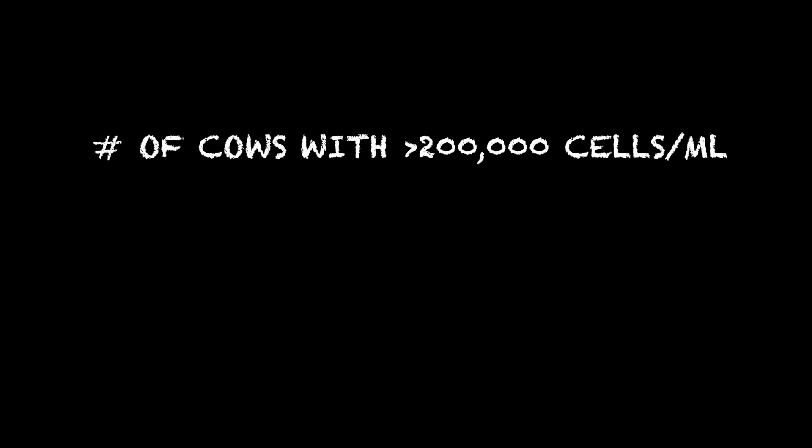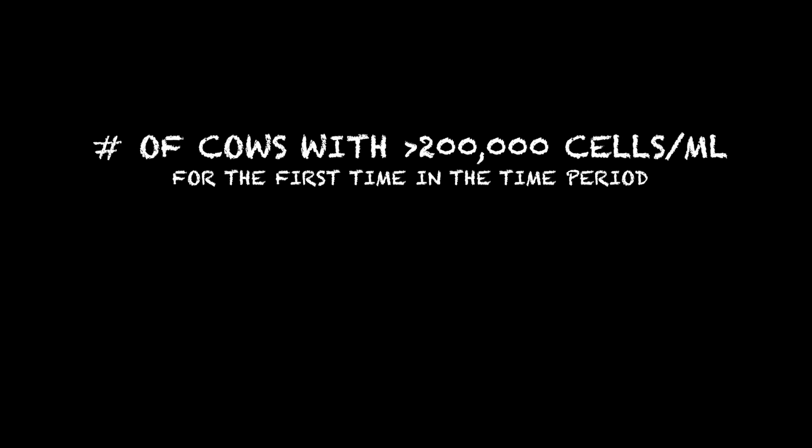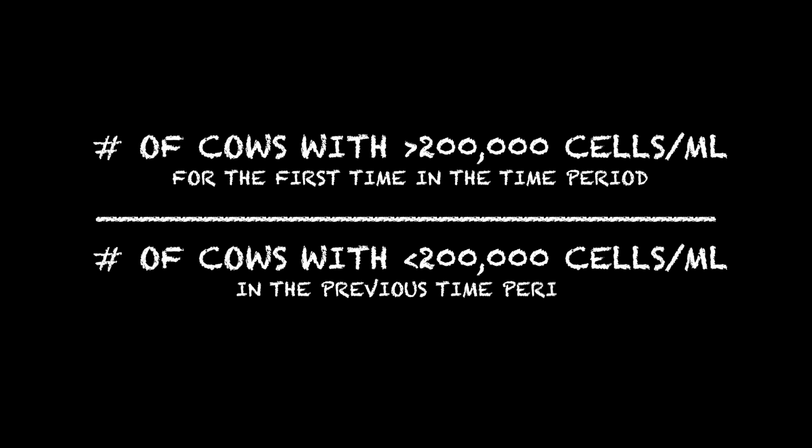Estimating the new infection rate is a little different than what we discussed previously. In the numerator of our formula, we put the number of cows that have a somatic cell count value greater than 200,000 cells for the first time in our time period — for example, the first time this month or this lactation. We divide that by the number of cows that had a somatic cell count less than 200,000 in the previous time period. The denominator is the number of cows that were healthy last month.